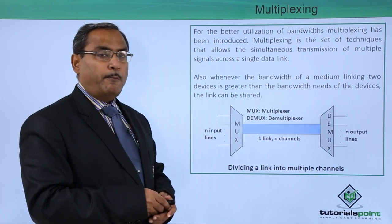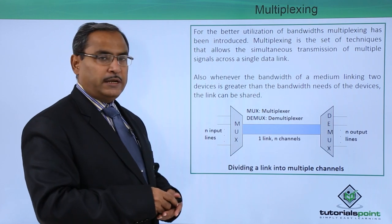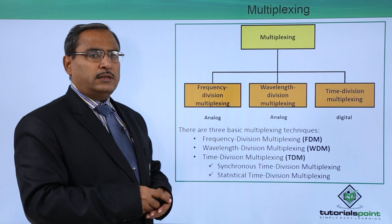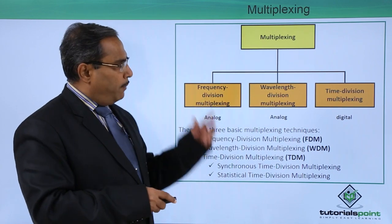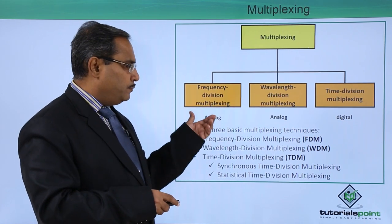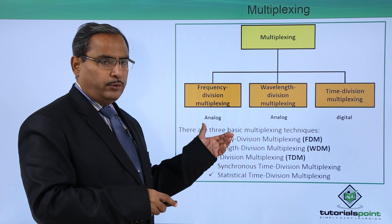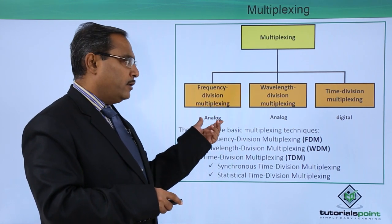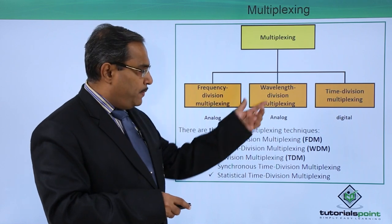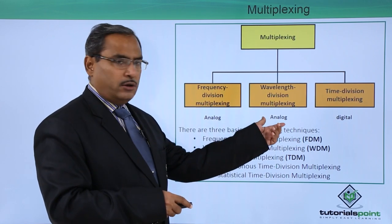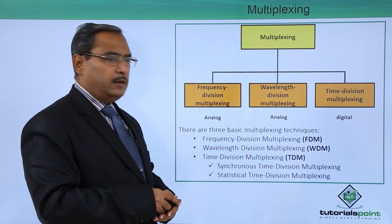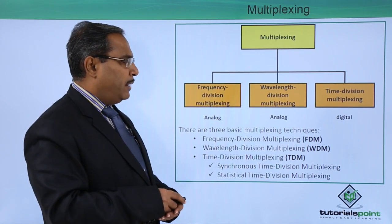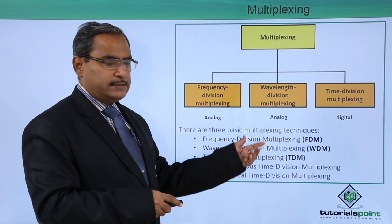Dividing a link into multiple channels is the respective case for multiplexing. Let us discuss what are the different categories. Multiplexing is mainly divided into three main categories: one is frequency division multiplexing, applicable for analog signals; wavelength division multiplexing, also for analog signals; and time division multiplexing, mainly for digital signals. There are three basic multiplexing techniques.